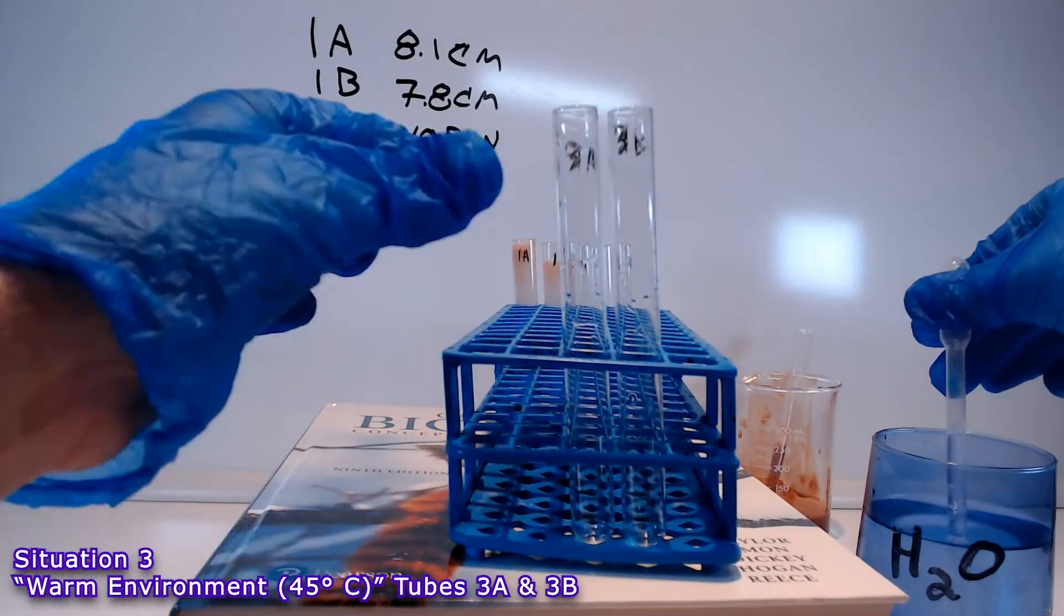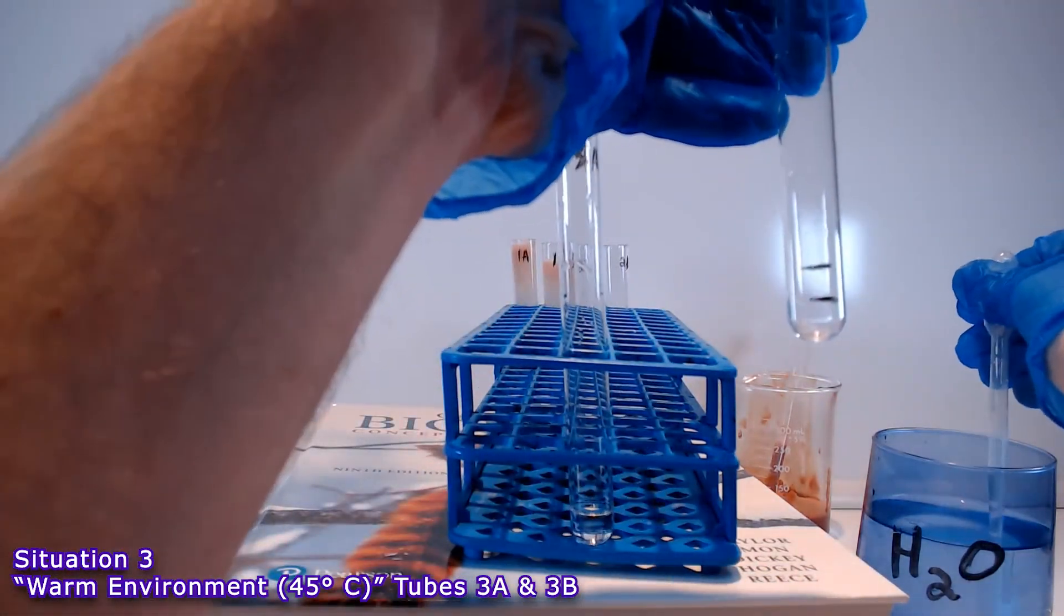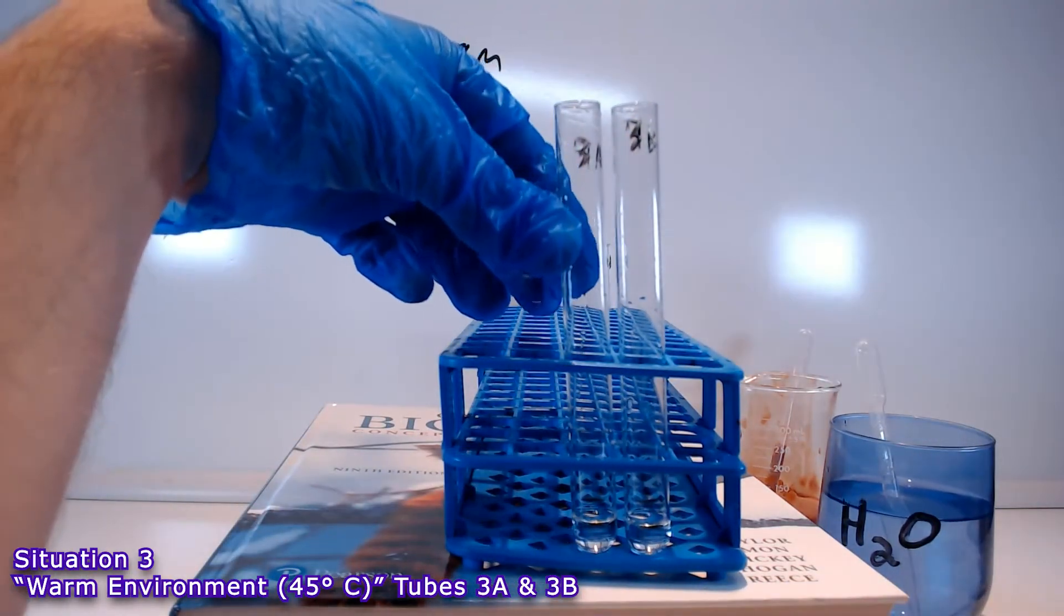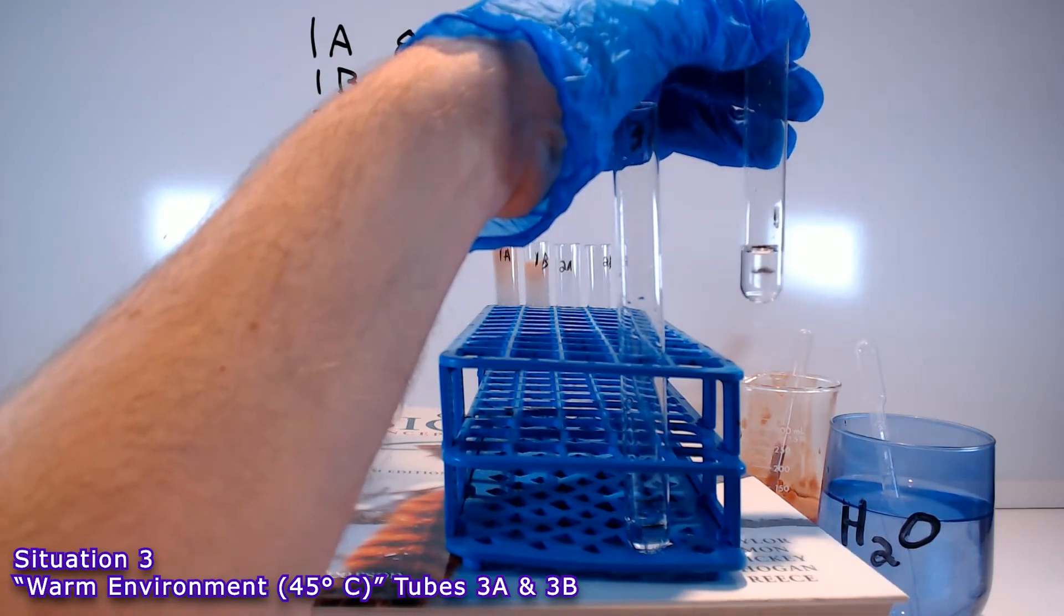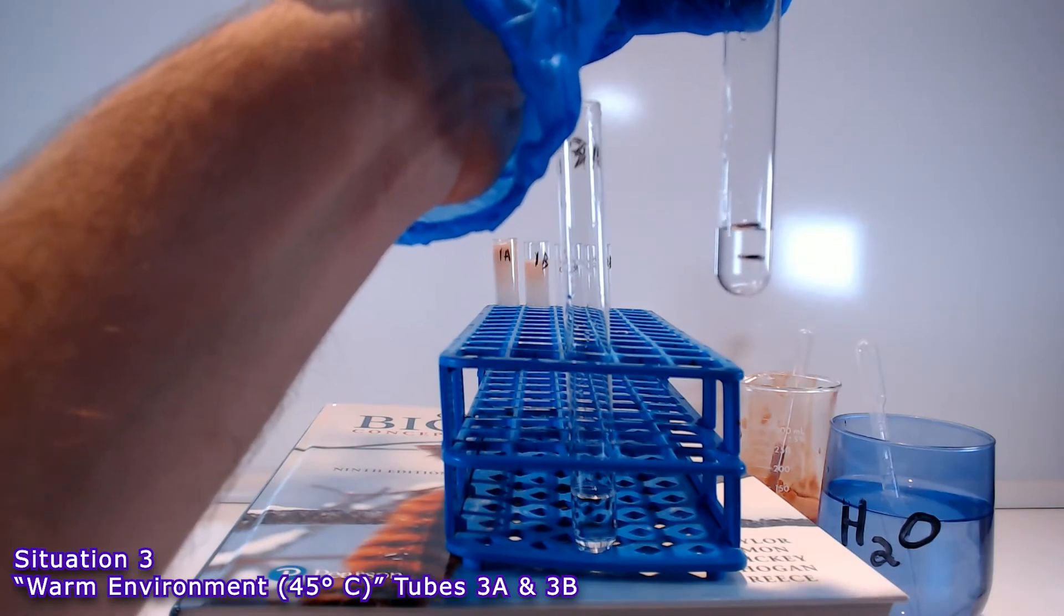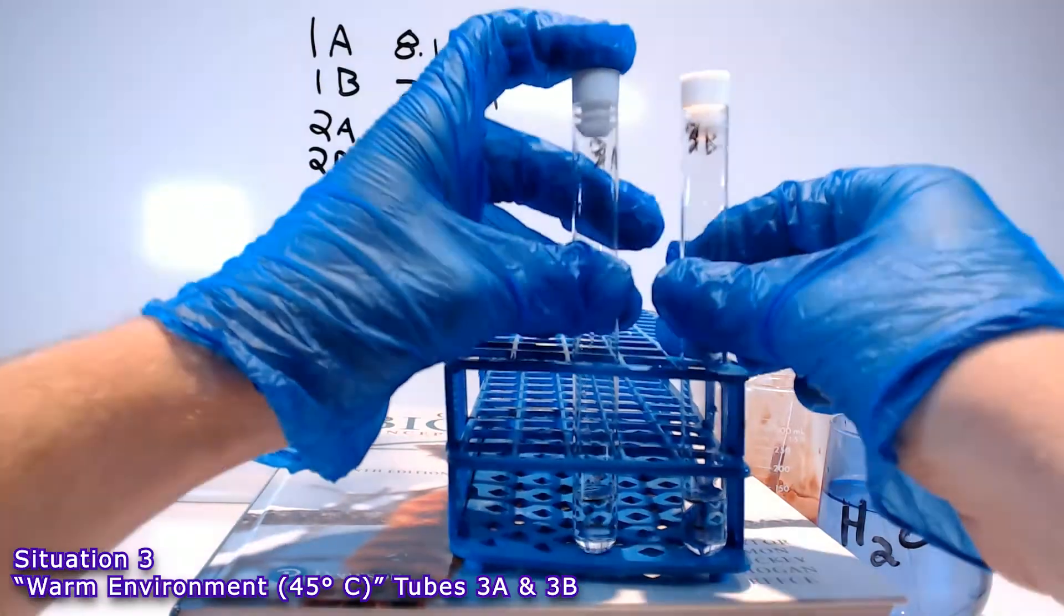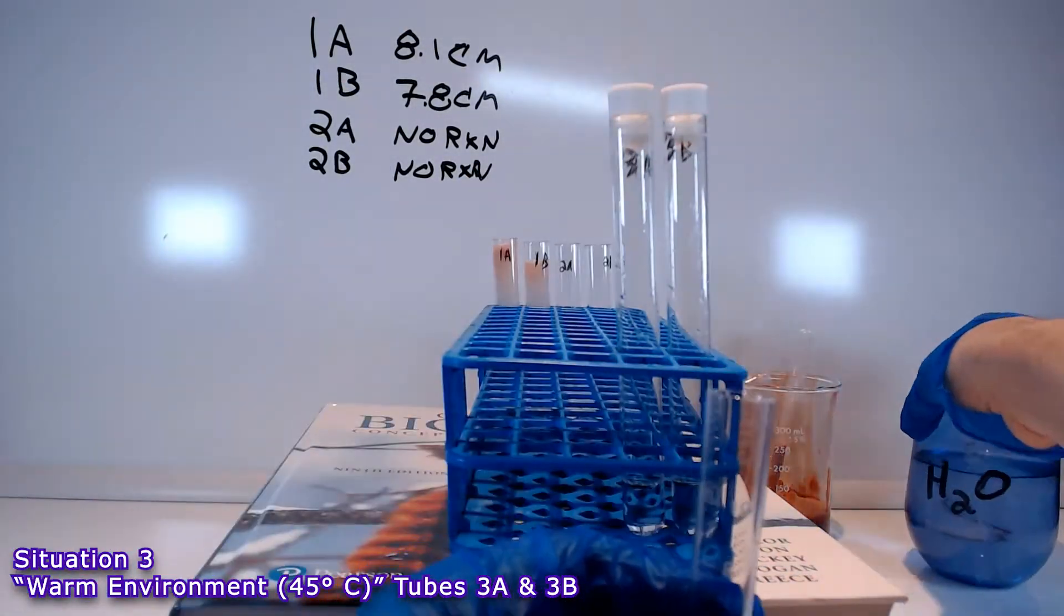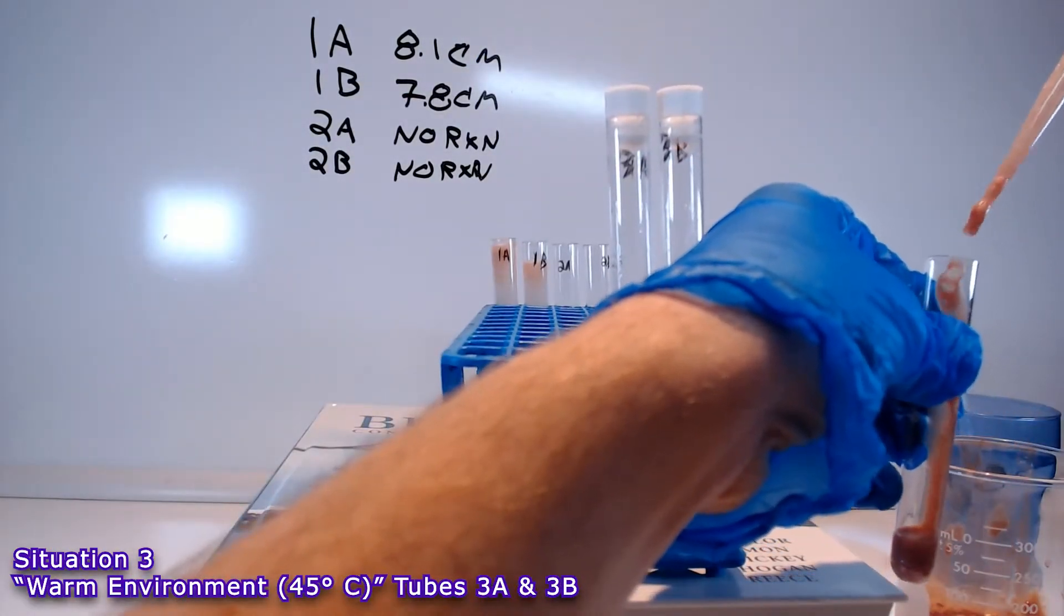In situation 3, the setup is relatively the same as in situation 1. We are going to add water to the 1 centimeter mark and hydrogen peroxide up to the 2 centimeter mark. The key difference is the temperature. Situation 1 was room temperature. But, for situation 3, we are going to heat up the hydrogen peroxide solution. We are also going to heat up the liver homogenate.